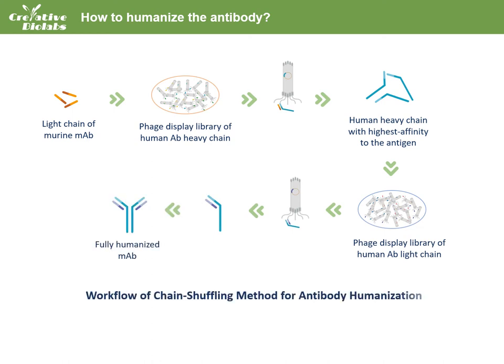The third-generation antibody humanization method, referred to as chain shuffling, uses phage antibody library technology to humanize the mouse antibody through chain replacement of mouse monoclonal antibody Fab fragments, resulting in a fully humanized antibody with 100% human antibody sequence that fundamentally overcomes the emergence of the human anti-mouse antibody response. In this strategy, the light chain of the rodent antibody is first replaced by light chains from a well-tested human antibody library. The resulting hybrid antibody library is then screened by panning against the particular antigen.